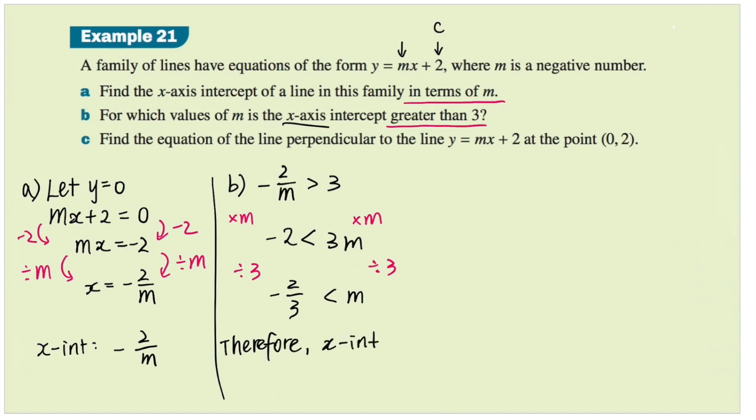Therefore, the x-intercept is greater than 3 for any value that's greater than negative 2 thirds and less than 0.